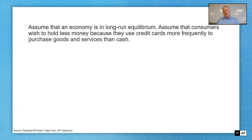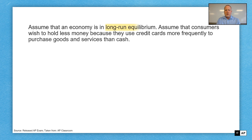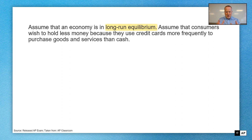FRQ number one. Let's read and define first because we have to define the problem before we can do anything else. Assume that an economy is in long-run equilibrium. Assume that consumers wish to hold less money because they use credit cards more frequently to purchase goods and services than cash. That long-run equilibrium is going to be important — highlight that and mark this up. Make sure you know what the situation is as you get into the question.